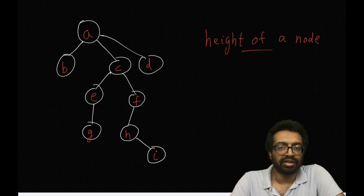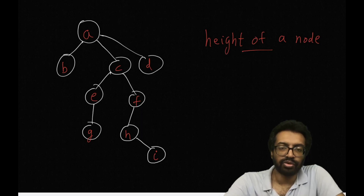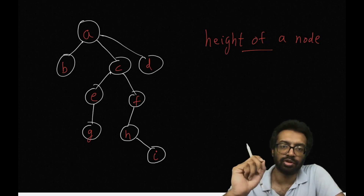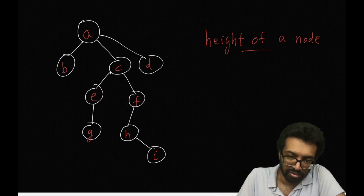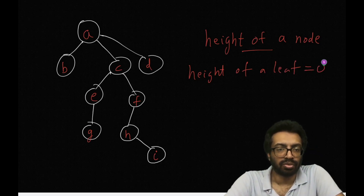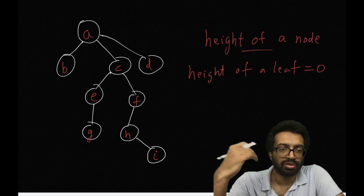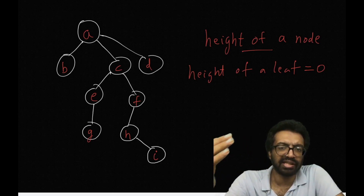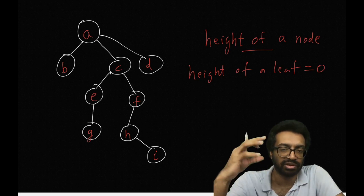The next thing we are interested in is height of a node. The height of a leaf is always going to be 0. So height of any leaf node is 0.